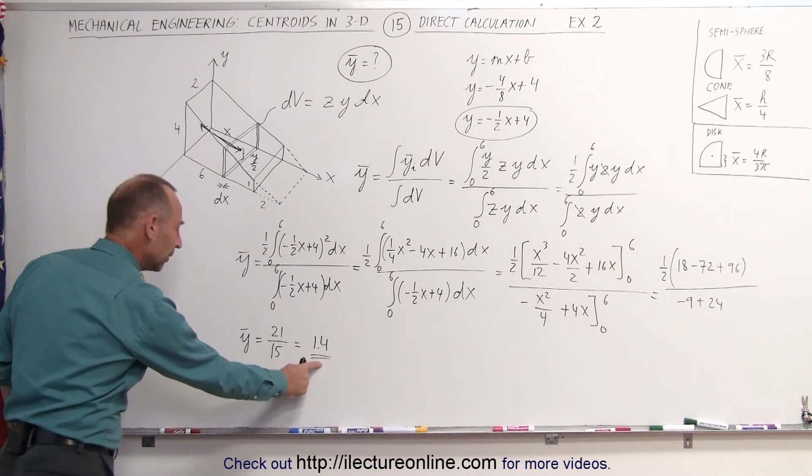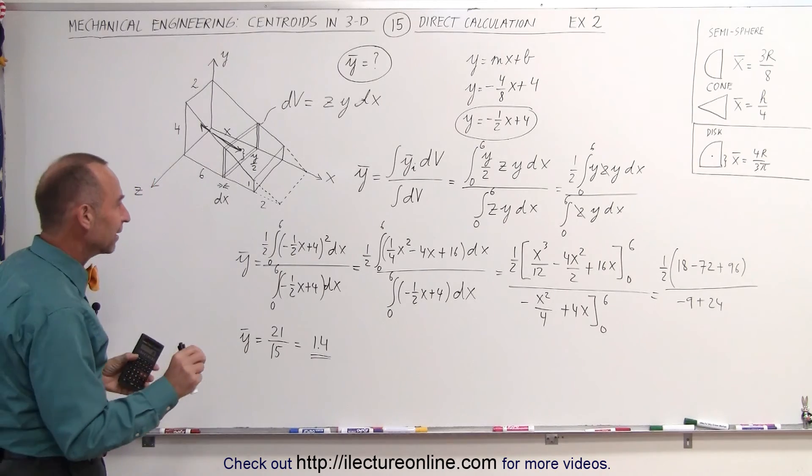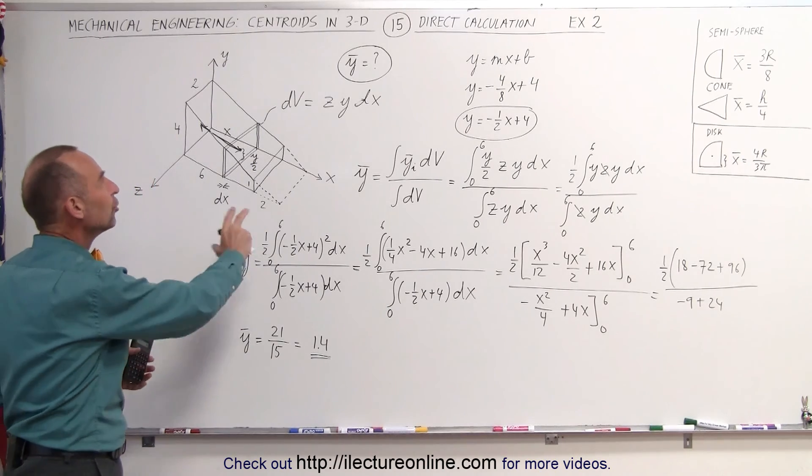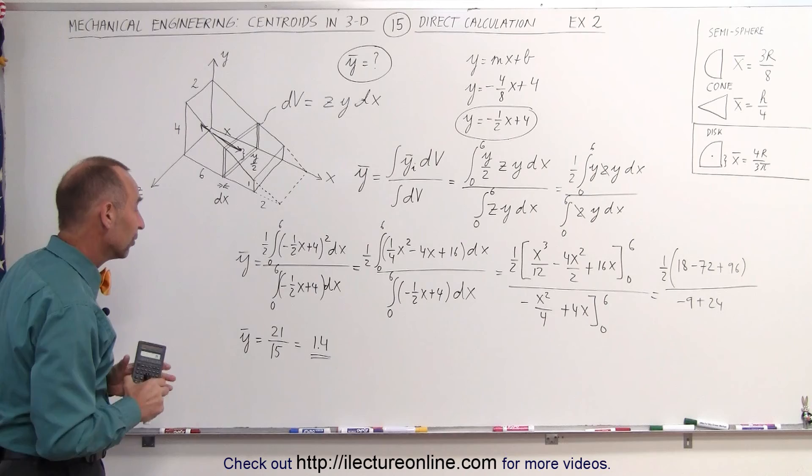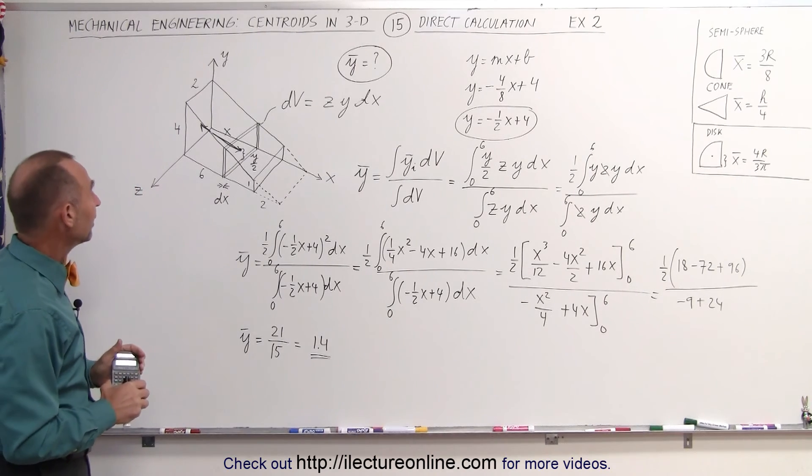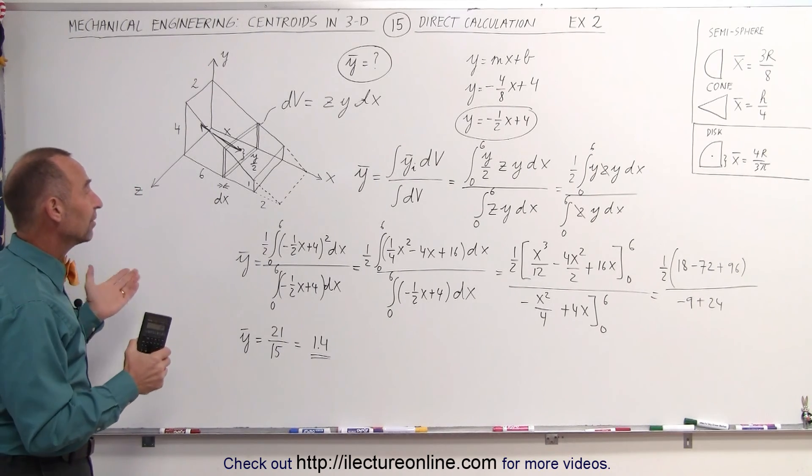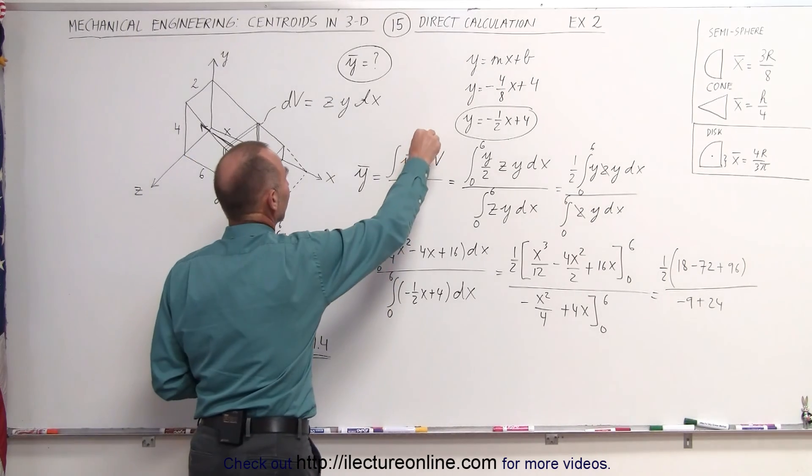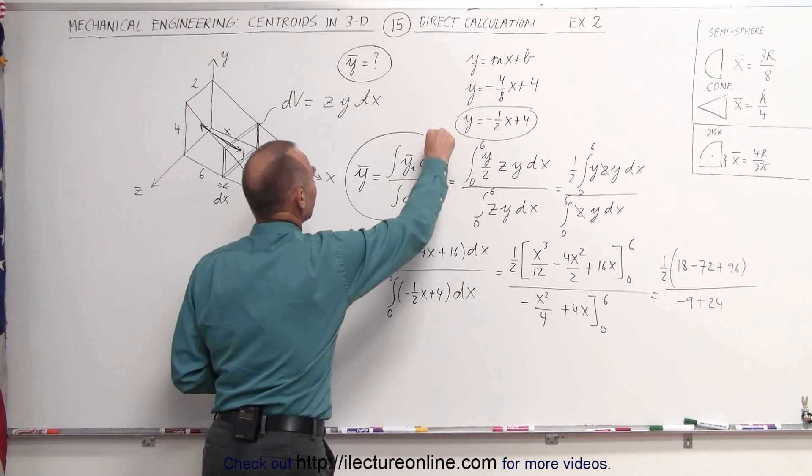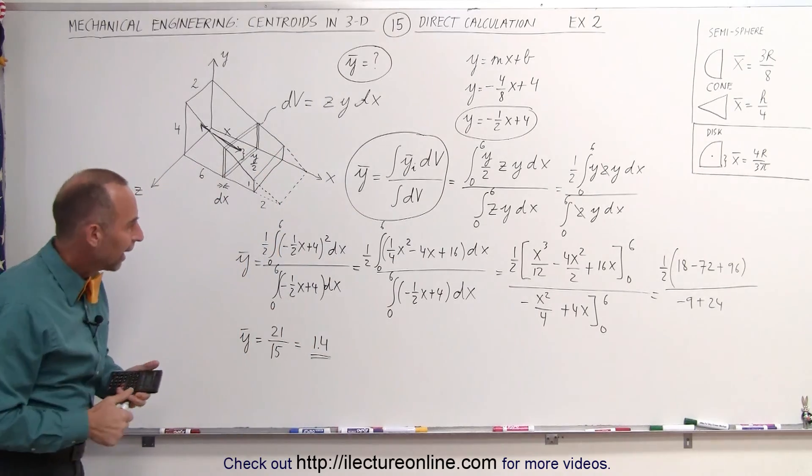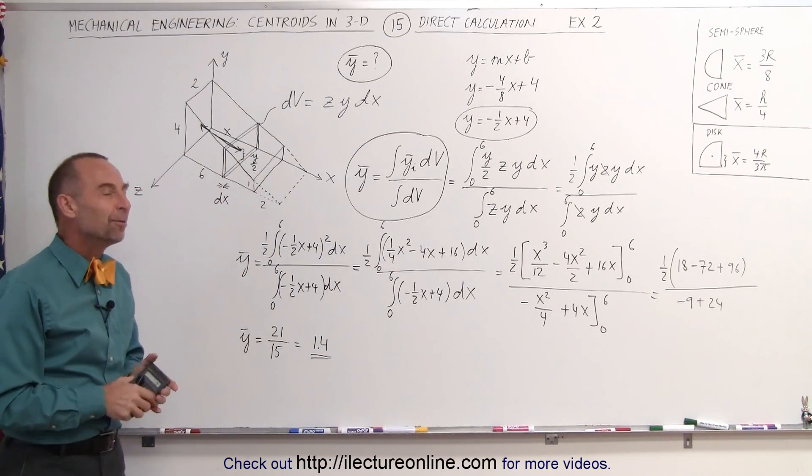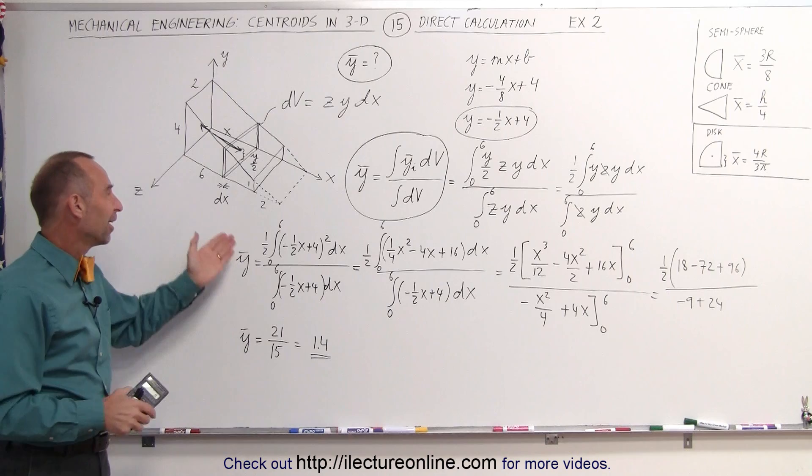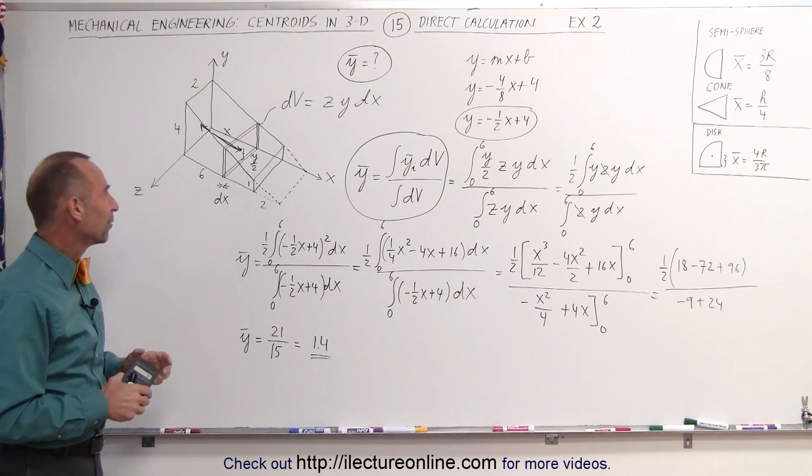If I remember right, 1.4 was the same answer we got in the previous example, where we didn't use the direct calculation method. Looks like we did everything correctly here. And again, that's how we do things in the direct calculation method. We use the equation where we find the centroid by using this relationship. And that is how we find the y-coordinate of the centroid of this cutoff wedge.